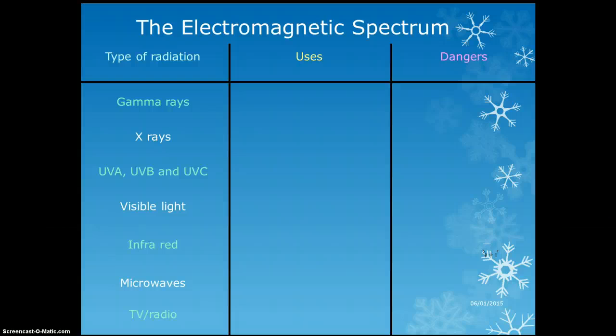Gamma rays are the most energetic, used for treating cancer and sterilizing surgical instruments, because basically they kill things. Which is obviously also a danger - if we put lots of high energy radiation into your body, it can cause cancer. They can be used to treat cancer, but can also cause it if used incorrectly.